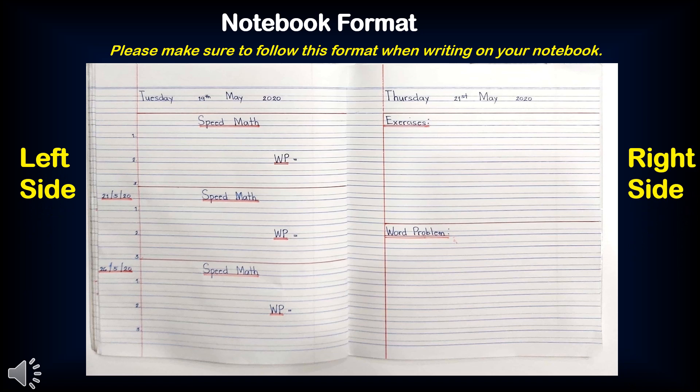Now, take a look at this notebook. On the left hand side, it is divided into three parts. On the right hand side, it is divided into two parts. On the first meeting, we will write the full date. For example, Tuesday, 19th May 2020. Speed maths. WP stands for word problem. Three items: one, two, three.